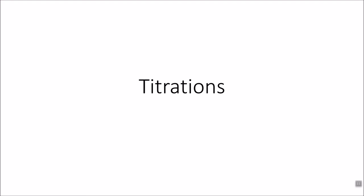In this section I want to talk about titrations. We have three antacids: equate antacid (calcium carbonate), milk of magnesia (magnesium hydroxide), and sodium bicarbonate antacid (sodium bicarbonate). What you notice about all these compounds is they're bases. When we've done titrations in the past, you've titrated using base in the burette and acid in the flask — that's not going to work here, because you'd essentially be adding base to base.